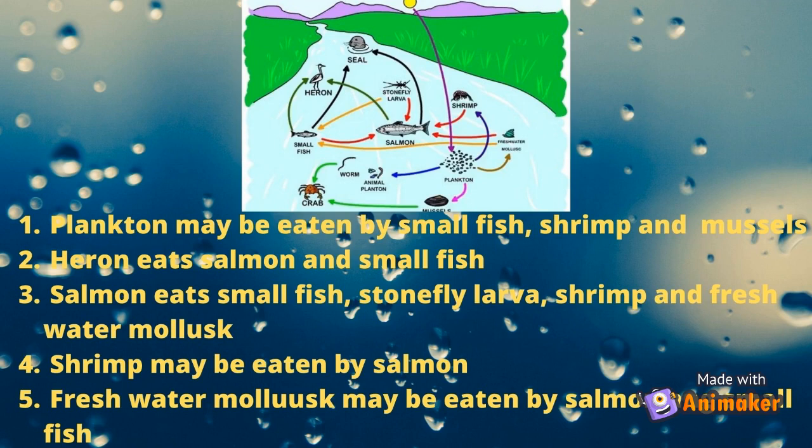Number 2: Heron eats salmon and small fish. Number 3: Salmon eats small fish, stonefly larva, shrimp, and freshwater mollusk. Number 4: Shrimp may be eaten by salmon. Number 5: Freshwater mollusk may be eaten by salmon and small fish.